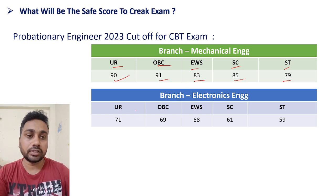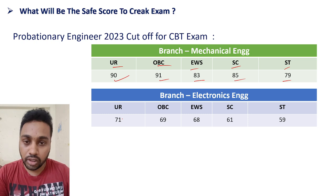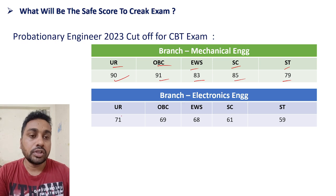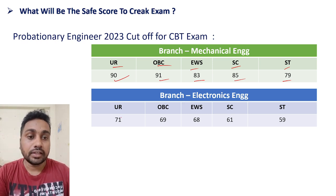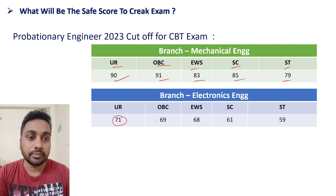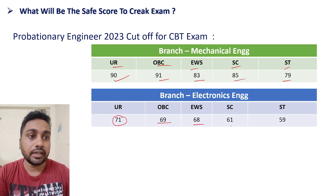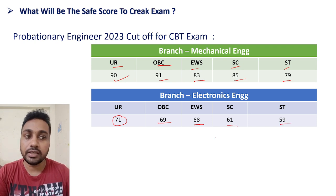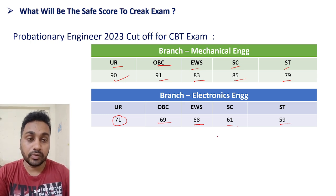For electronics, since I am teaching electronics here, for the last year 2023 the cutoff for general category was 71, OBC was 69, EWS was 68, SC was 61, and ST was 59. This is the previous year cutoff data.